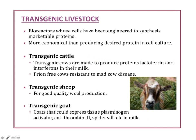Transgenic cows have been made to produce lactoferrin and interferons in their milk, and it is also possible to create prion-free cows that are resistant to mad cow disease. Transgenic sheep have been created for good quality wool production, and transgenic goats have been created that can express tissue plasminogen activator enzyme, antithrombin 3 enzyme, and spider silk in their milk.